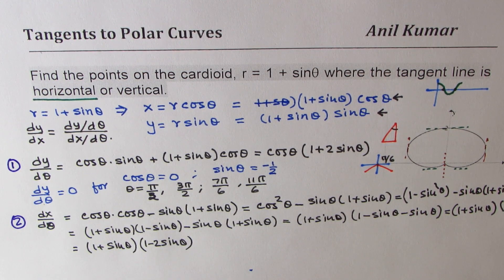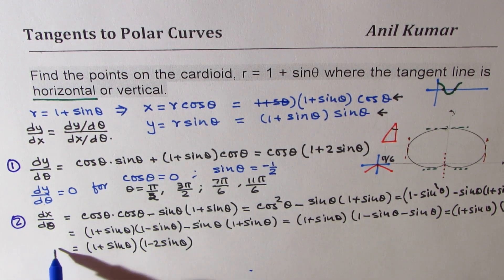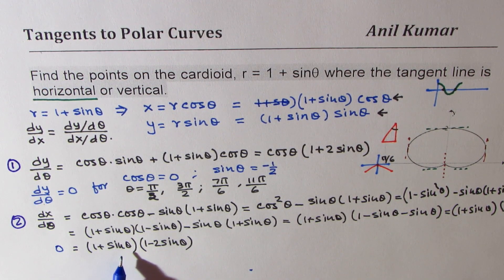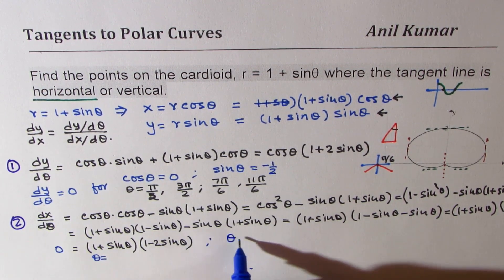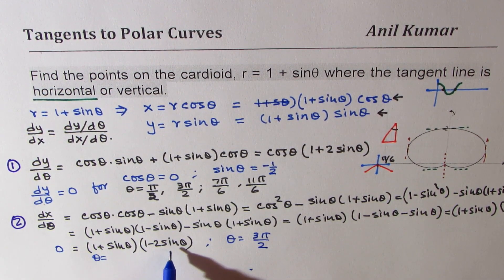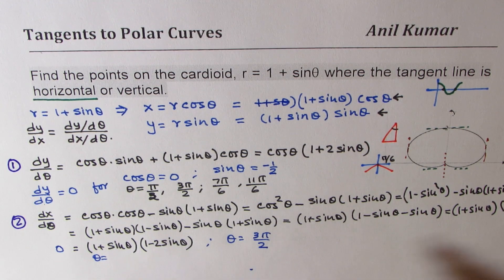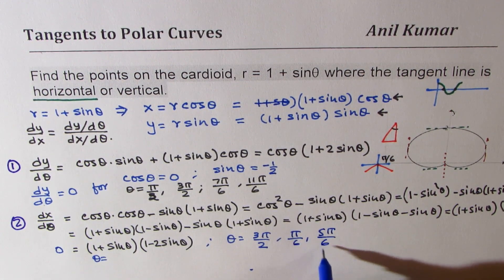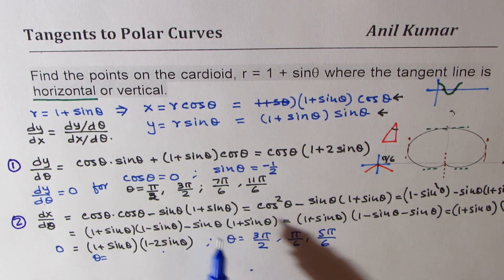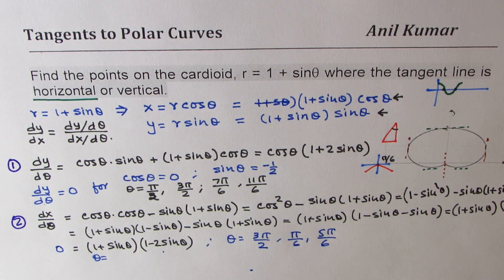From this factored form, equating dx/dθ to zero: sine theta equals −1 gives theta equals 3π/2. For sine theta equals 1/2, solutions are in quadrants 1 and 2, giving theta equals π/6 and 5π/6. So we have these values for dx/dθ equals zero.